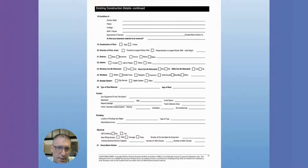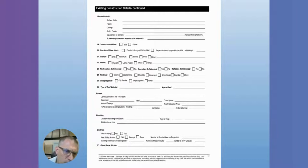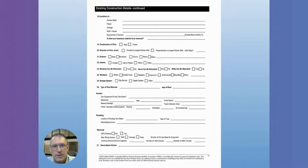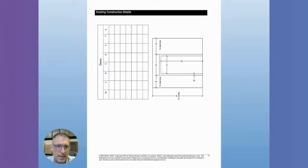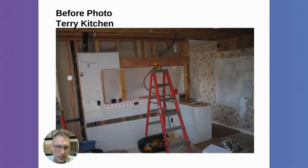Existing construction details are important to be aware of. Pay attention to the floor construction — is it on a concrete slab or are there floor joists below? That affects how easy it will be to access the floor if you need to run electrical, plumbing, or HVAC. Also pay close attention to your existing windows and door placements, as well as ventilation ducting.